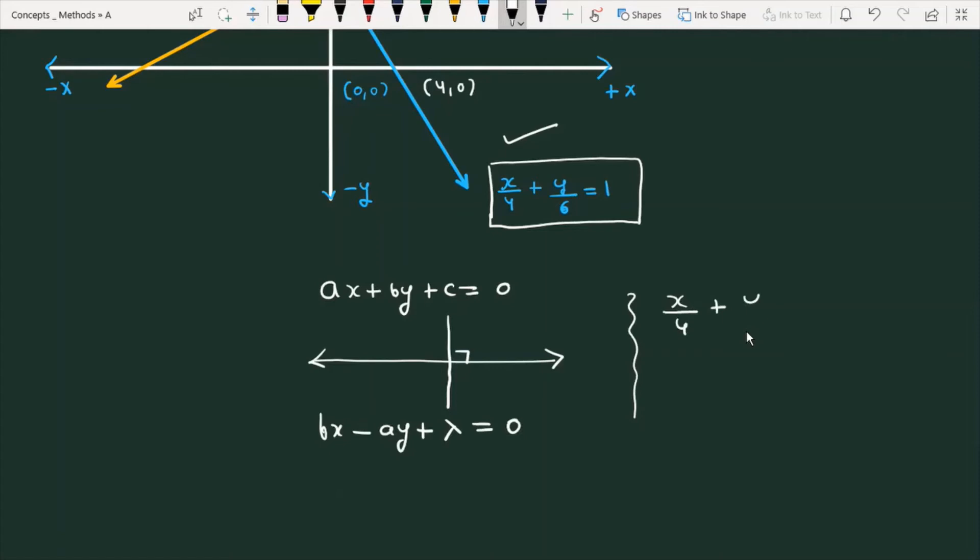For the line x/4 + y/6 = 1, if I have to write the equation of the perpendicular line, I need to write x/6 - y/4 + λ = 0.